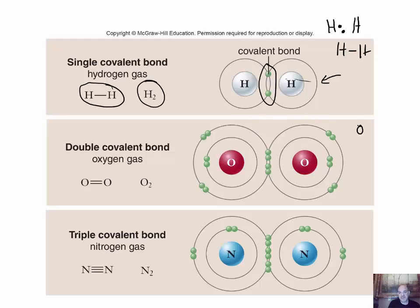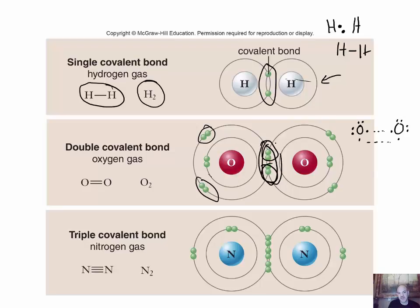For oxygen, the dot structure shows six valence electrons, so it is not stable on its own. Two oxygen atoms each have two unpaired electrons that can be shared, resulting in two pairs being shared — a double bond. Each oxygen now has eight electrons associated with it, satisfying the octet rule. The double bond is represented by two dashes in the structural formula. The unshared pairs are also sometimes shown. The molecular formula is O2.